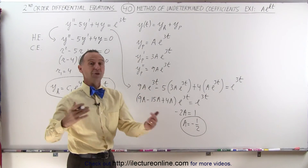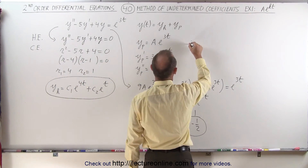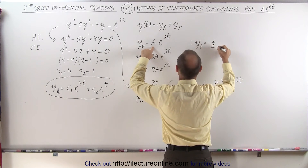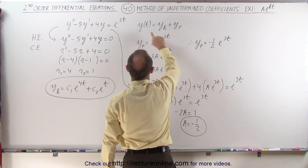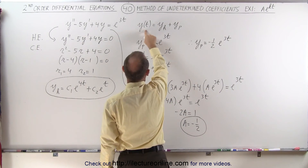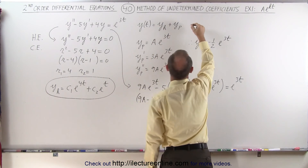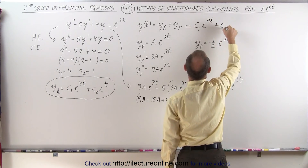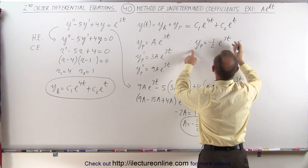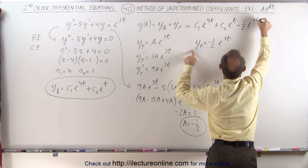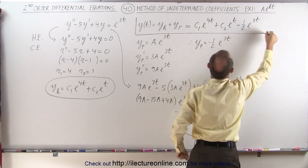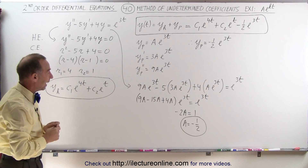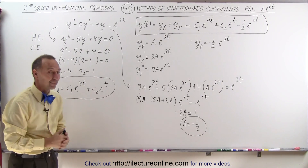We have now determined the undetermined coefficient. The particular solution is therefore minus one-half times e^(3t). The complete solution to the non-homogeneous differential equation is: y equals c1*e^(4t) plus c2*e^(t) minus one-half*e^(3t). This method is pretty convenient, and it's not that hard to find the coefficients using this technique.